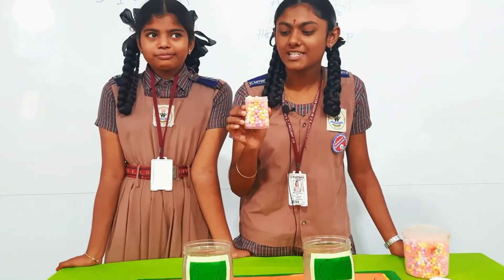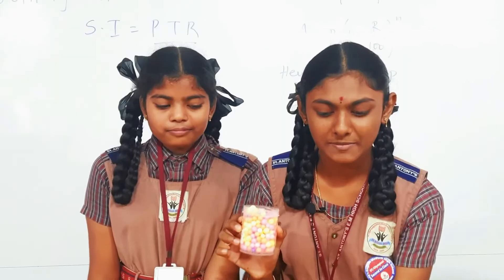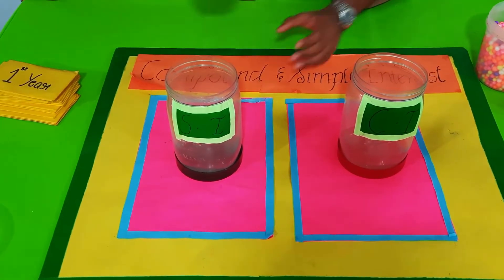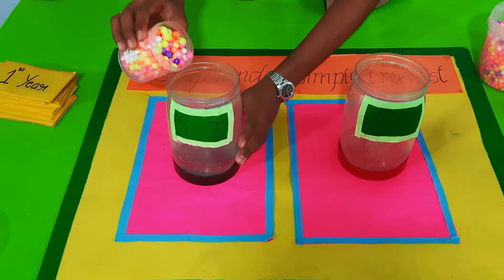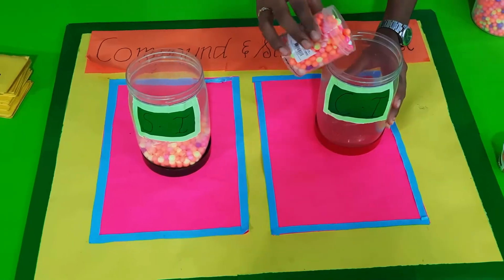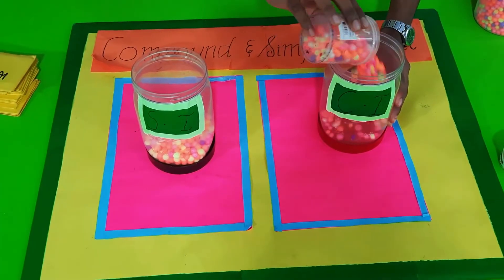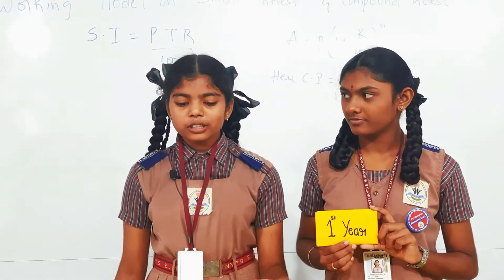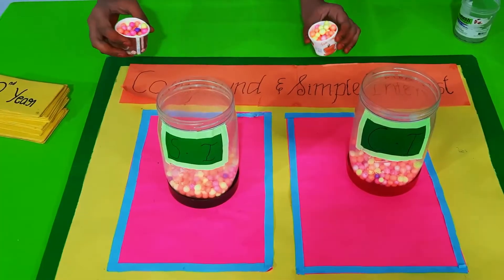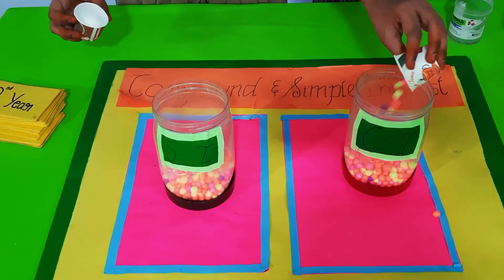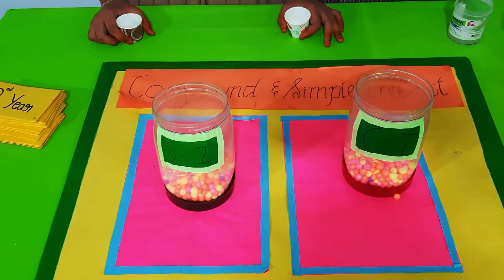I am taking this as principal for both simple interest and compound interest. Now I am putting this principal on the simple interest, and the same principal I am putting on the compound interest. In the first year, I am taking interest with this cup for both compound and simple interest, since the principals are the same.